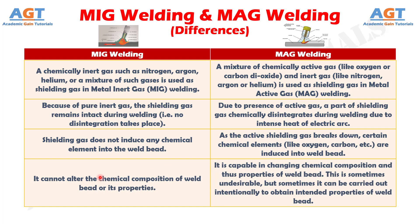Number four: MIG welding cannot alter the chemical composition of the weld bead or its properties. Whereas, MAG welding is capable of changing the chemical composition and thus the properties of the weld bead. This is sometimes undesirable, but sometimes it can be carried out intentionally to obtain the intended properties of the weld bead.